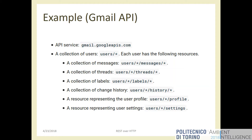There are two different families in the Gmail API: things about the user's mail — messages, threads, labels — and things about the user themselves — profile and settings. Profile is a singular resource, not a collection, because a user has only one profile. Settings is also just one resource with a list of settings. Messages, on the other hand, is a collection holding many different messages, each with their own representation. This distinction between a collection and a single resource is not always easy to get right when you have a complex application.